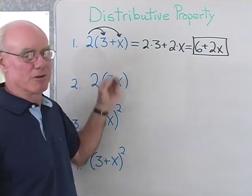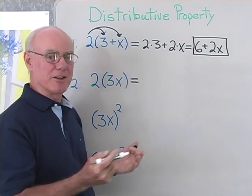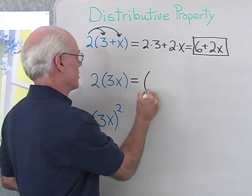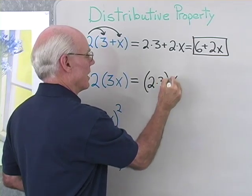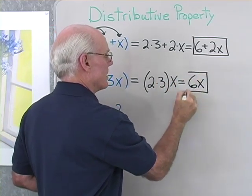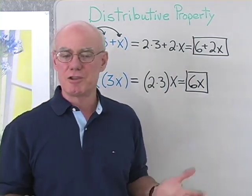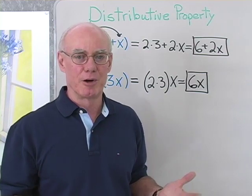Multiplication distributes over addition and subtraction. So in this case we would simply apply the associative property of multiplication to write this as 2 times 3 times X, which would be 6X. The associative property of multiplication is the thing to apply here.